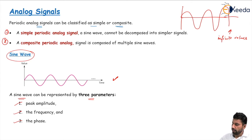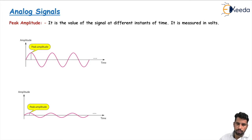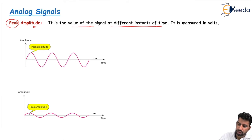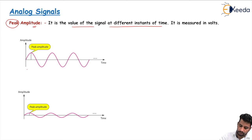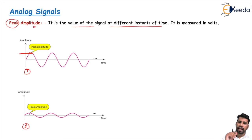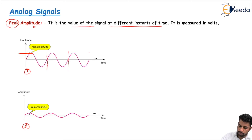We will discuss all three in detail. First, if we talk about amplitude — also called peak amplitude — amplitude is the value of the signal at different instances of time. Here you see this is the sine wave. This is the peak value; this peak value corresponds to the peak amplitude. The peak amplitude at different instances of time represents the wave's height.